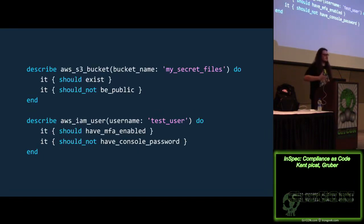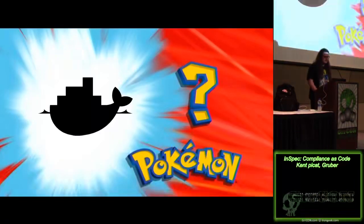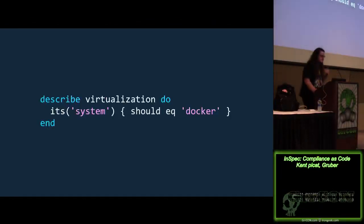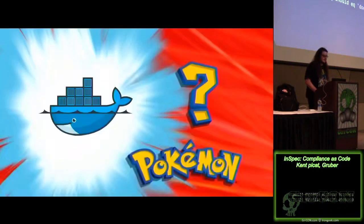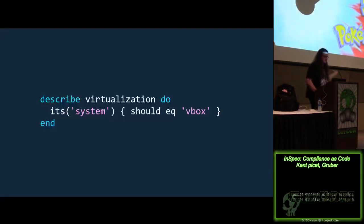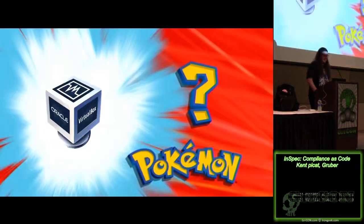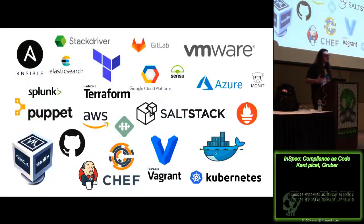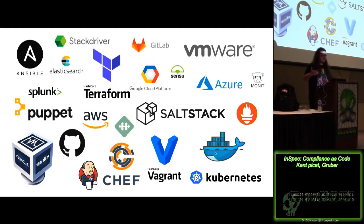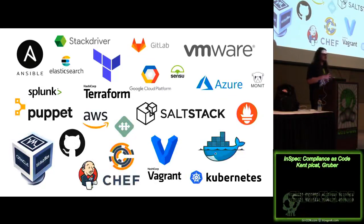You need to take these processes — things you're doing day-to-day to protect people — and make them actionable. You can describe the virtualization system a thing is running on. There needs to be a way to codify the processes to check these things, whether you're using AWS, Google Cloud, or Azure. These things have APIs — why not automate instead of going into the GUI? InSpec is extensible, and usually the community has built something for it.